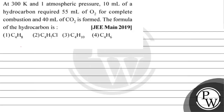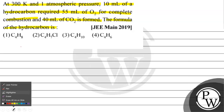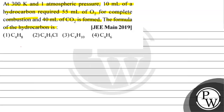Let's read this question. The question says: at 300 Kelvin and 1 atm atmospheric pressure, 10 ml of hydrocarbon requires 55 ml of oxygen for complete combustion and 40 ml of carbon dioxide is formed. The formula of the hydrocarbon is: option 1 C₄H₈, option 2 C₄H₇Cl, option 3 C₄H₁₀, or option 4 C₄H₆.